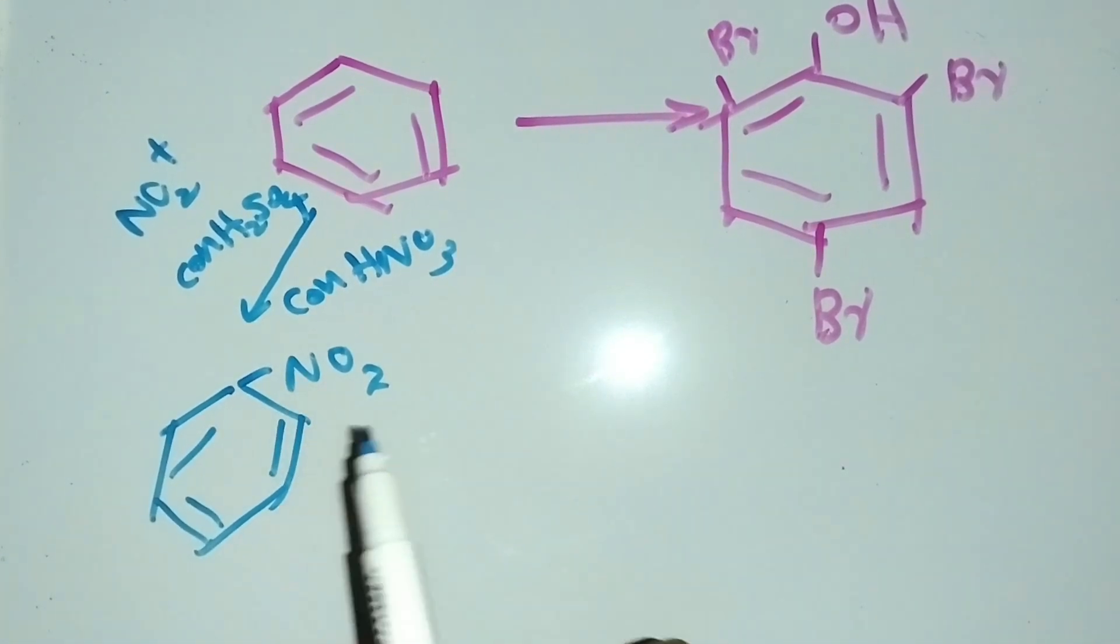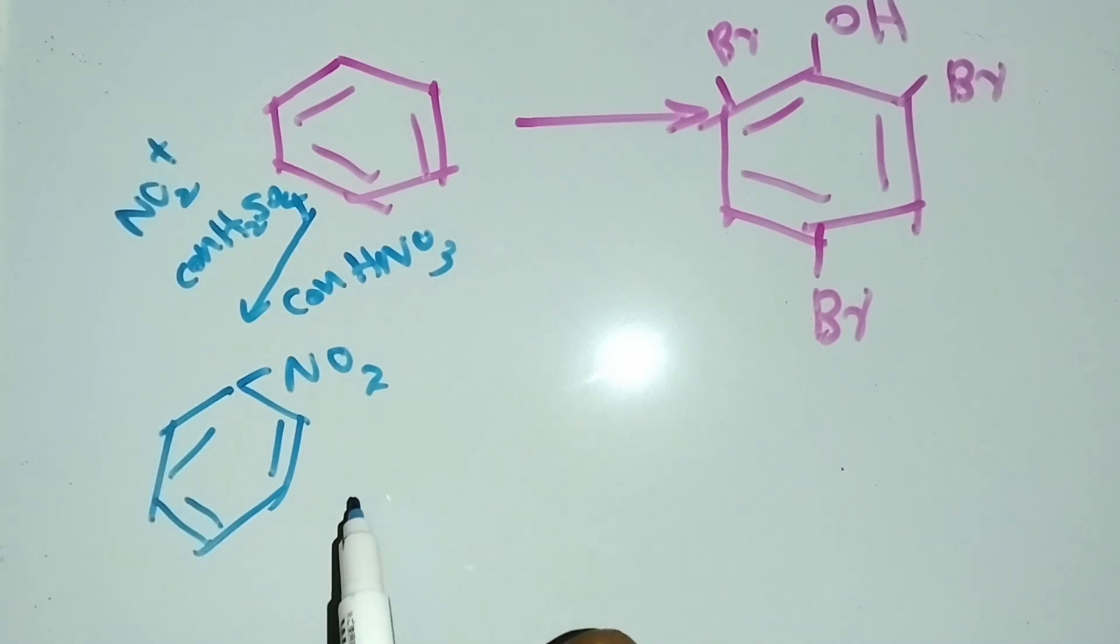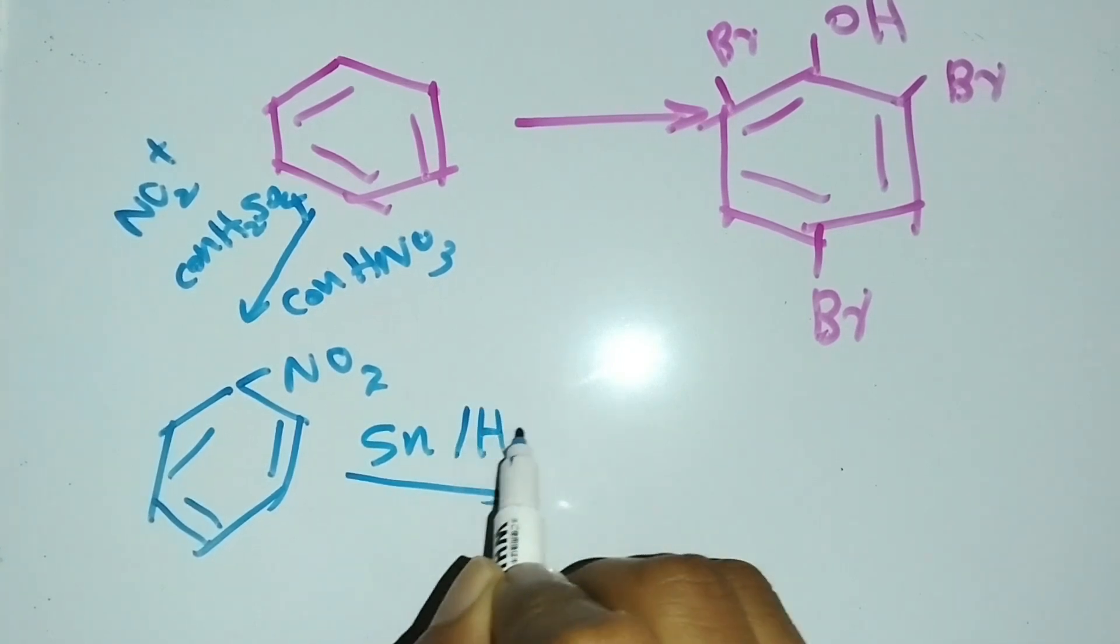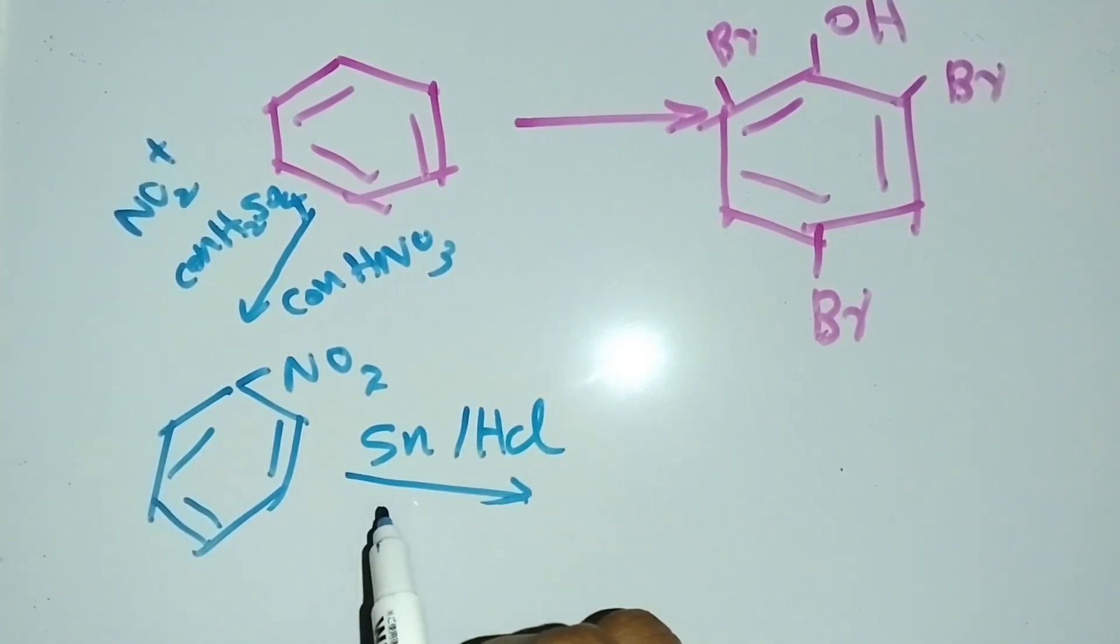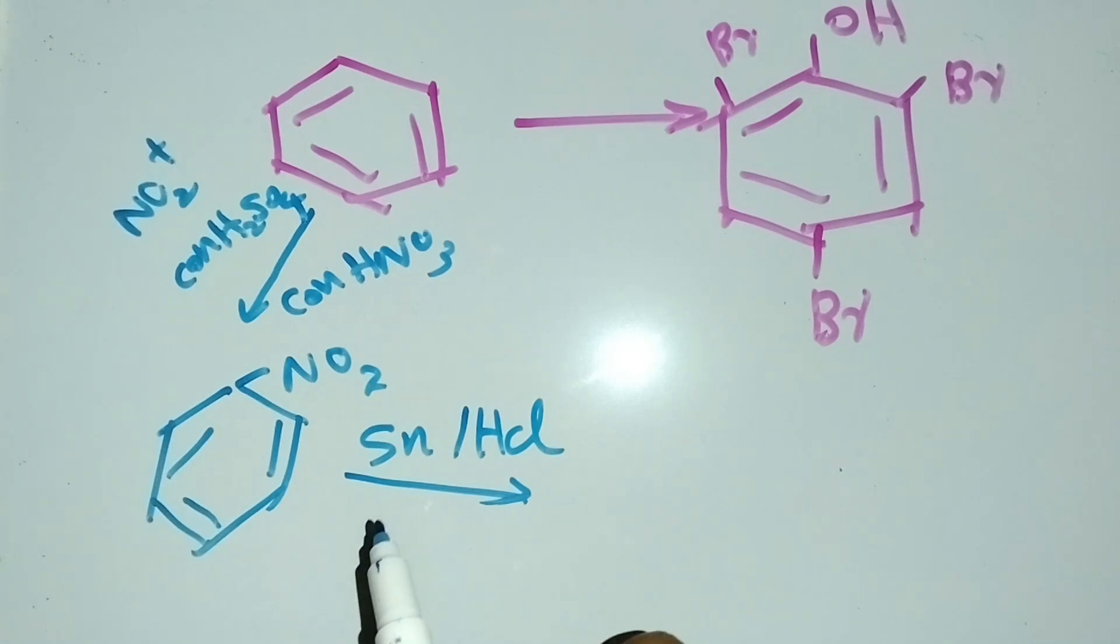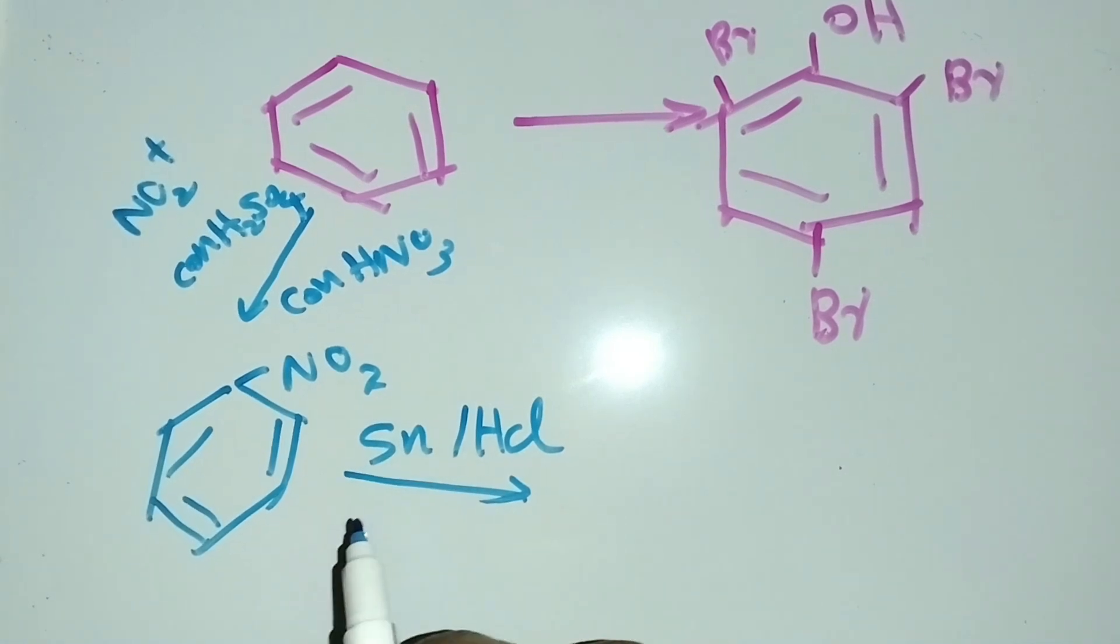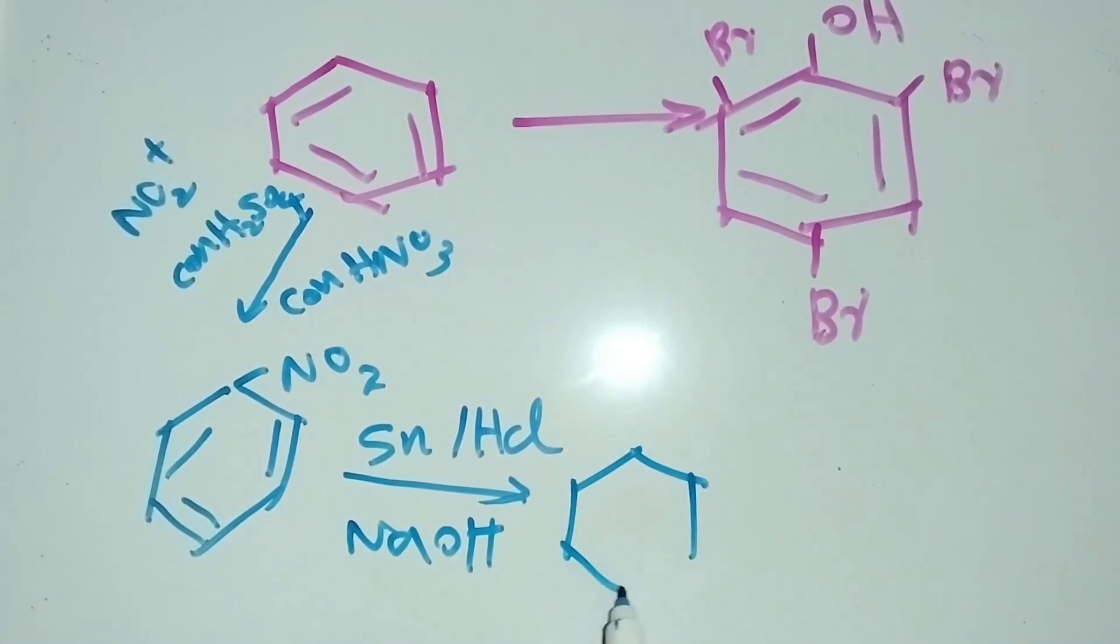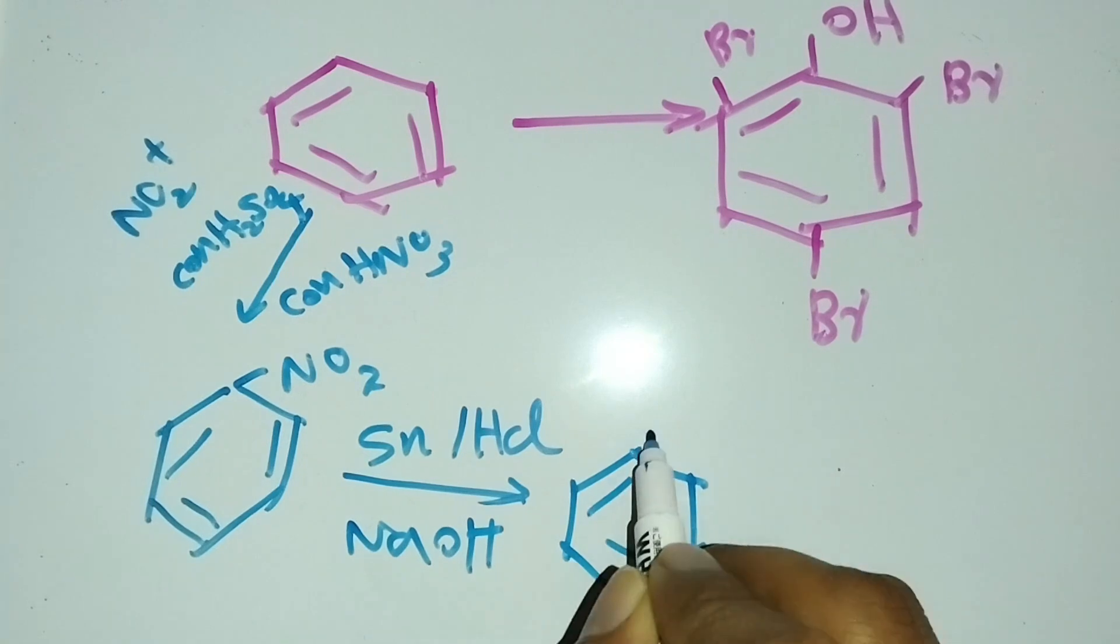In the second step, we have to convert this nitrobenzene into aniline. For that conversion, we have to use tin HCl in the first step. In the second step, we have to use sodium hydroxide. This reaction will provide aniline.